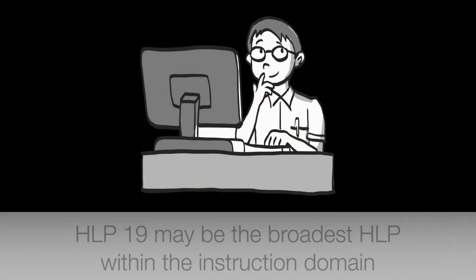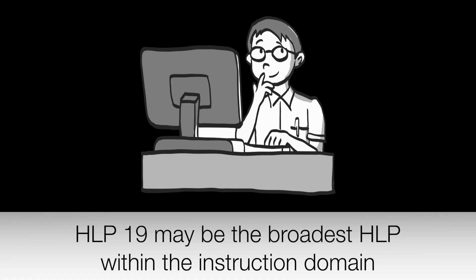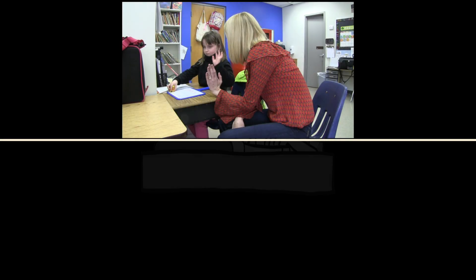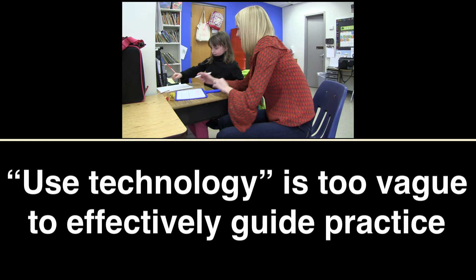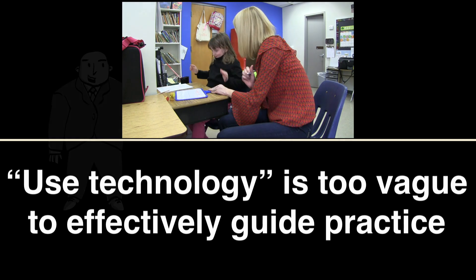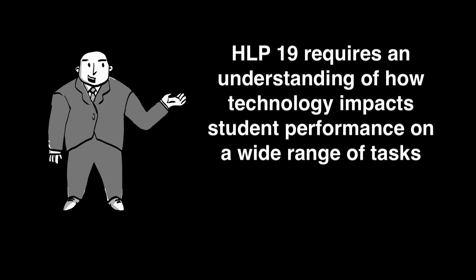HLP 19, Use Assistive and Instructional Technology, may be the broadest HLP within the instruction domain, due to the expansive range of technology options and their varied purposes for teaching and learning. Simply recommending the use of technology for teaching and learning is too vague to effectively guide practice. HLP 19 requires an understanding of how technology impacts student performance on a wide range of tasks, including academic, behavior, mobility, and communication.